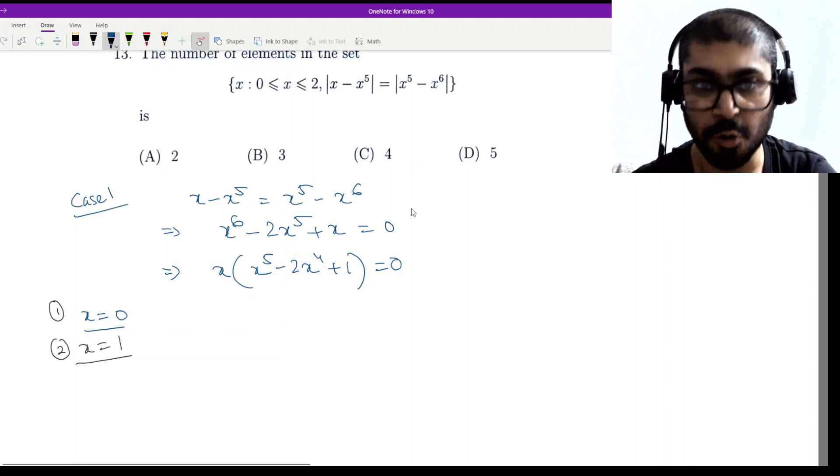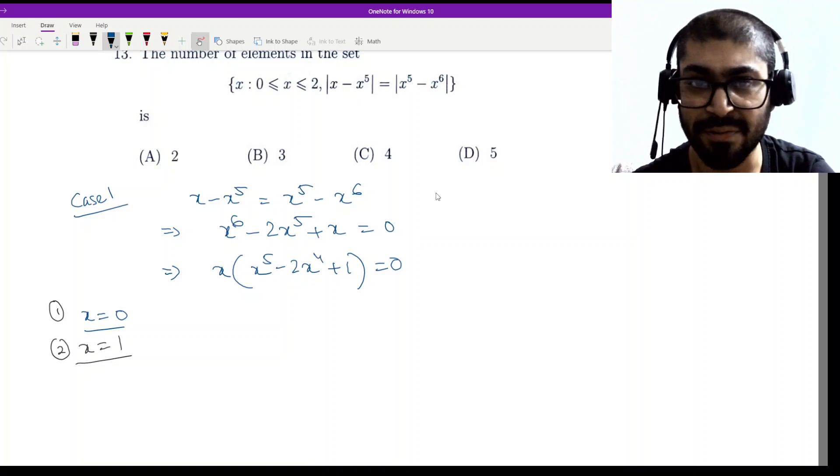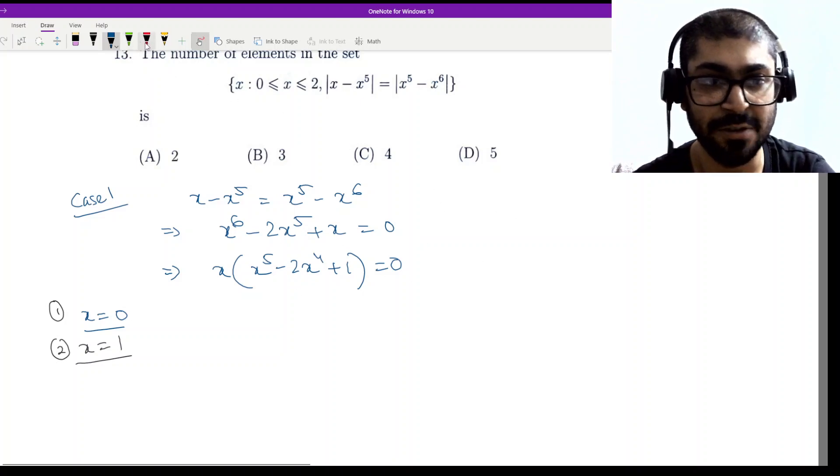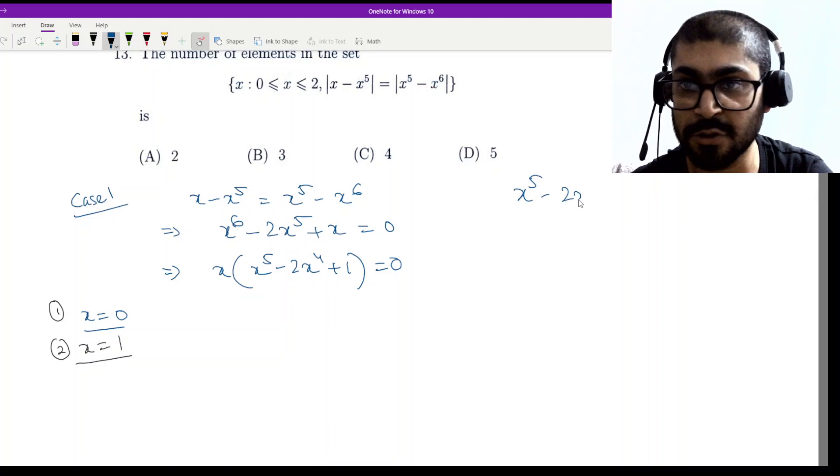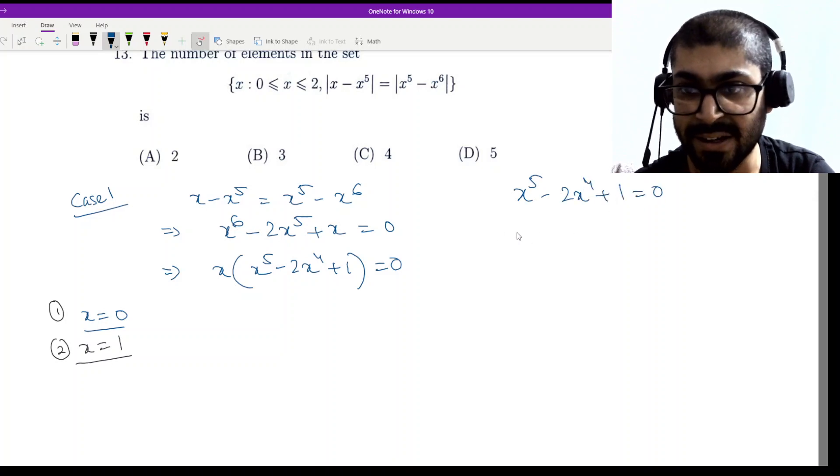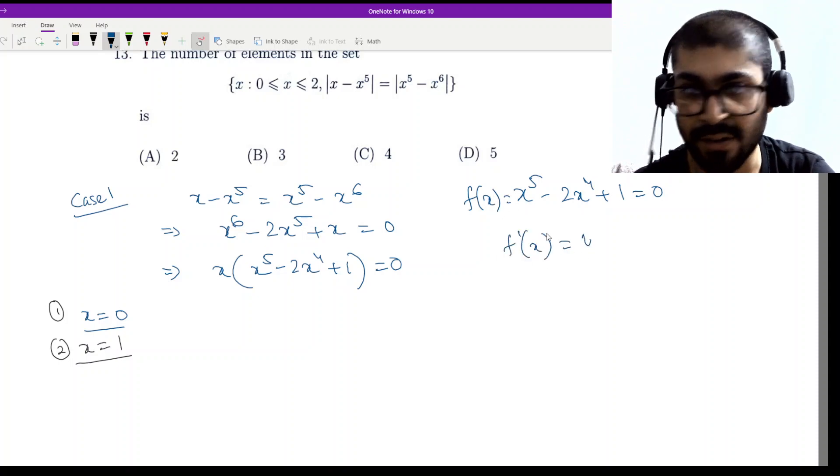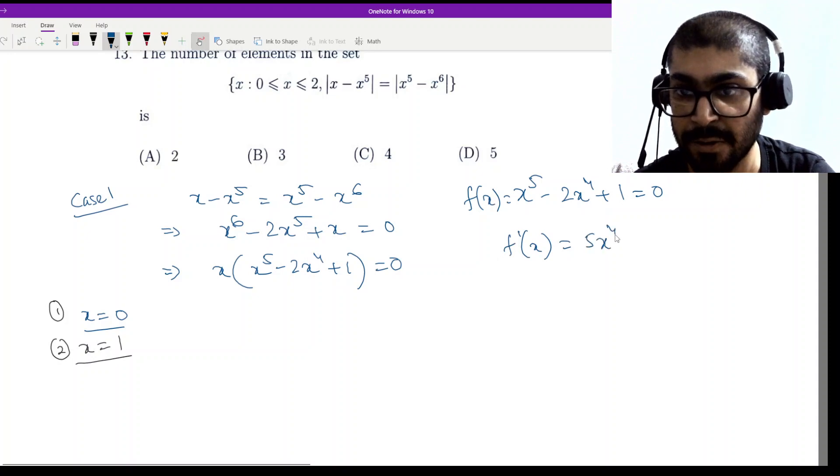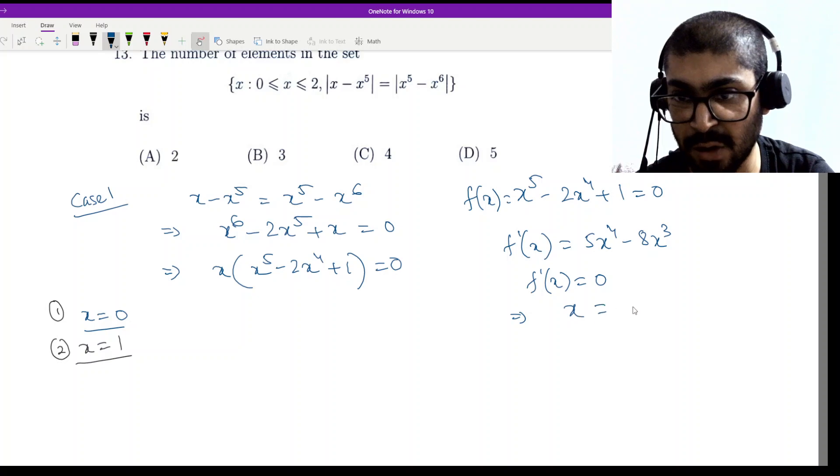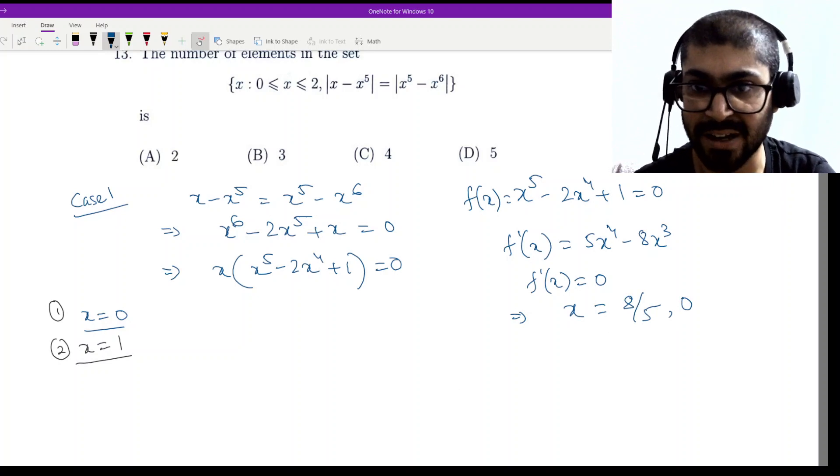So when you do the derivative, what would you get? Just focus on x to the power 5 minus 2x to the power 4 plus 1 equal to 0. Because we have already gotten the two solutions x equal to 0 and x equal to 1. So then f dashed x will be 5x to the power 4 minus 8x cube. So f dashed x equal to 0 implies x cube times 5x equal to 8, giving x equal to 8 by 5 and x equal to 0.